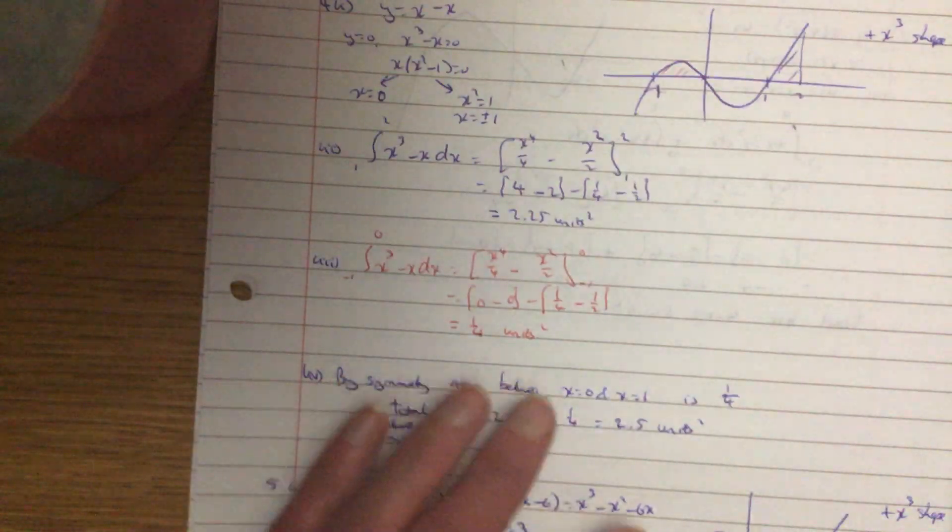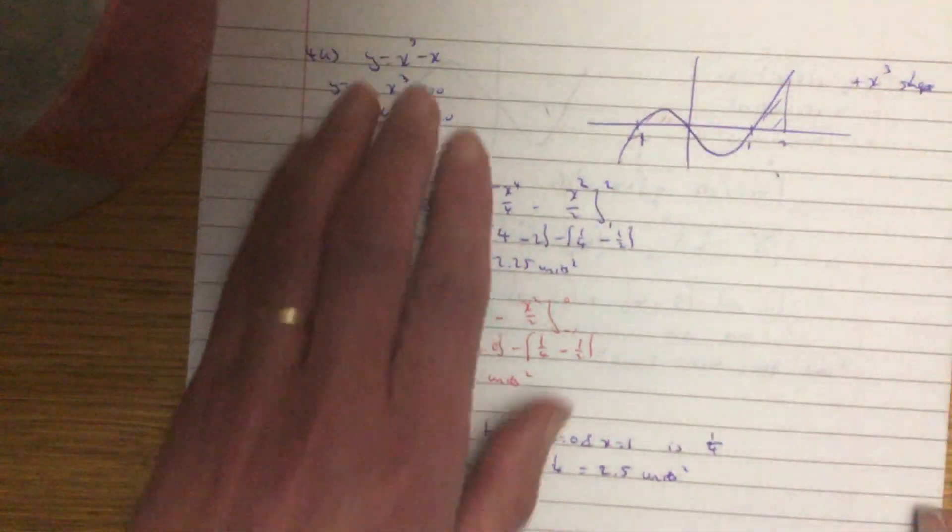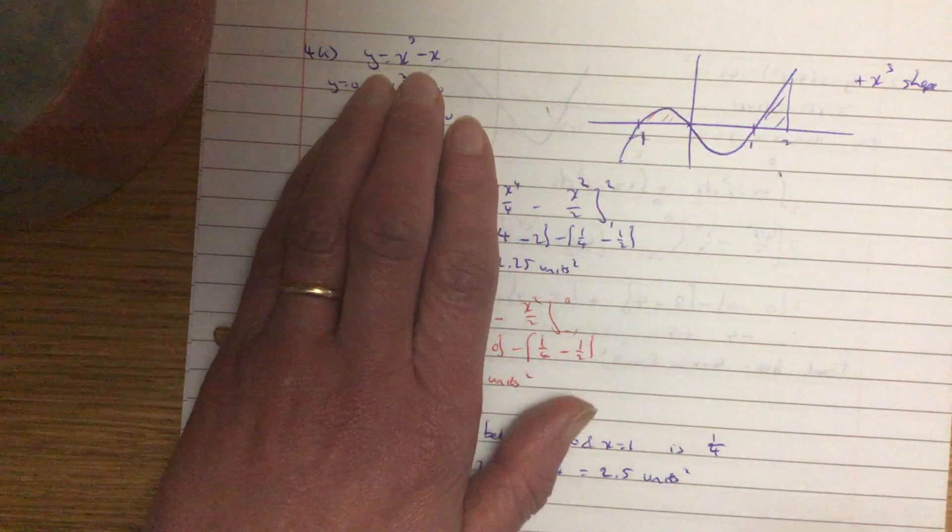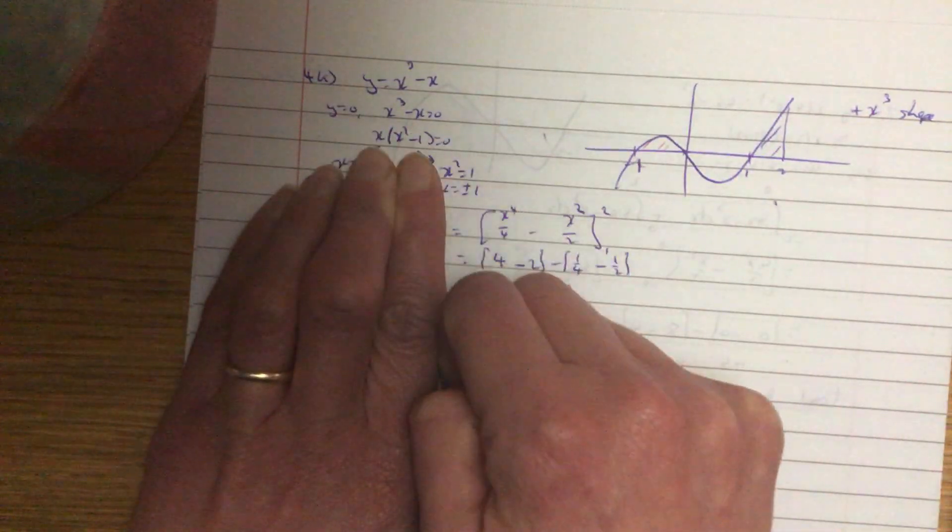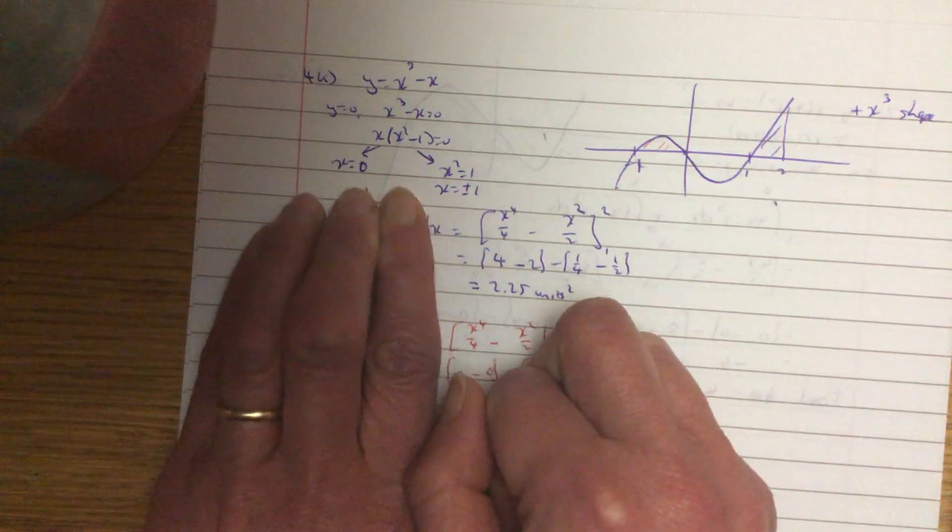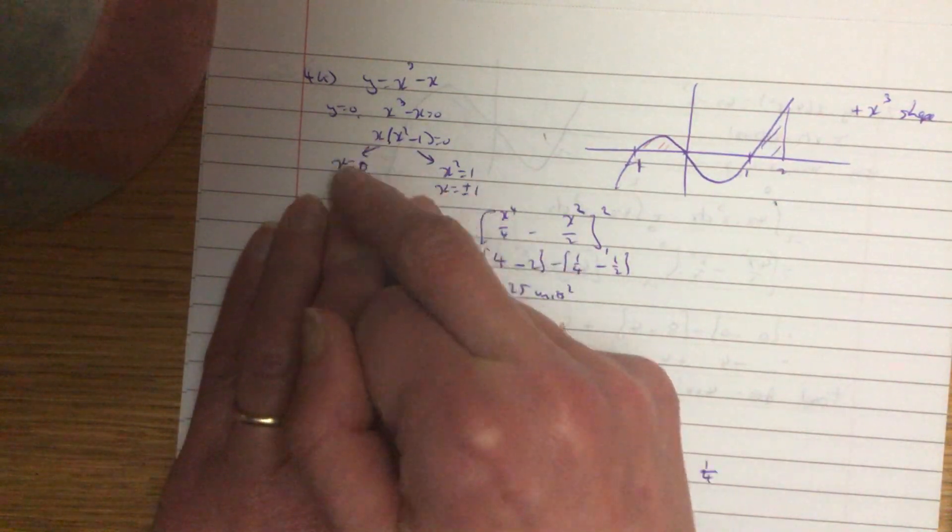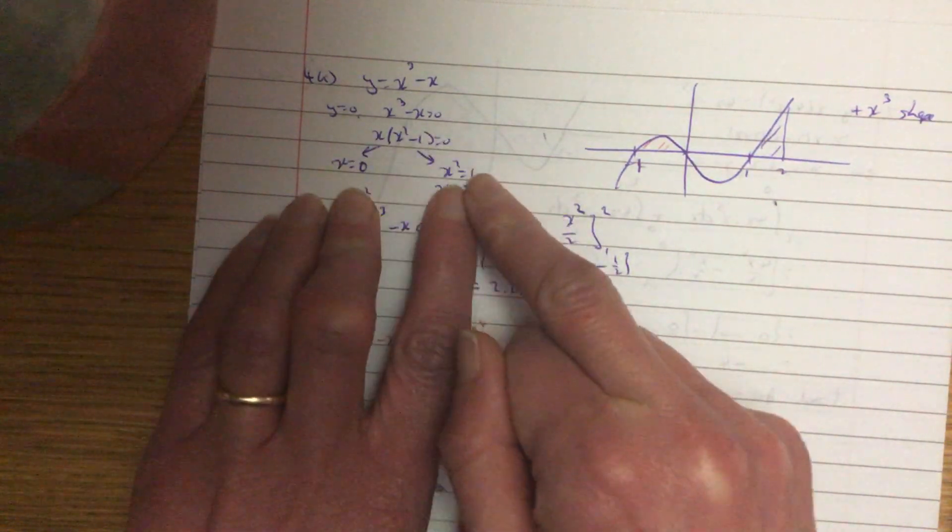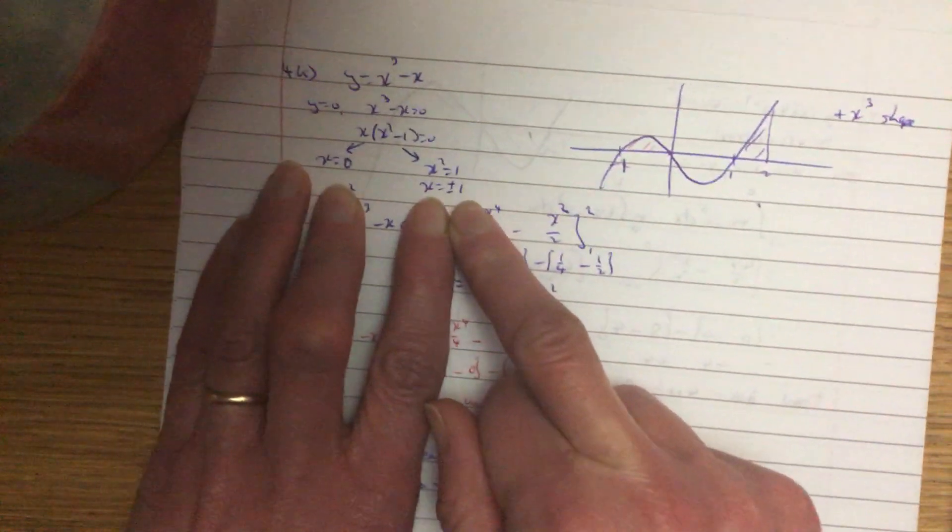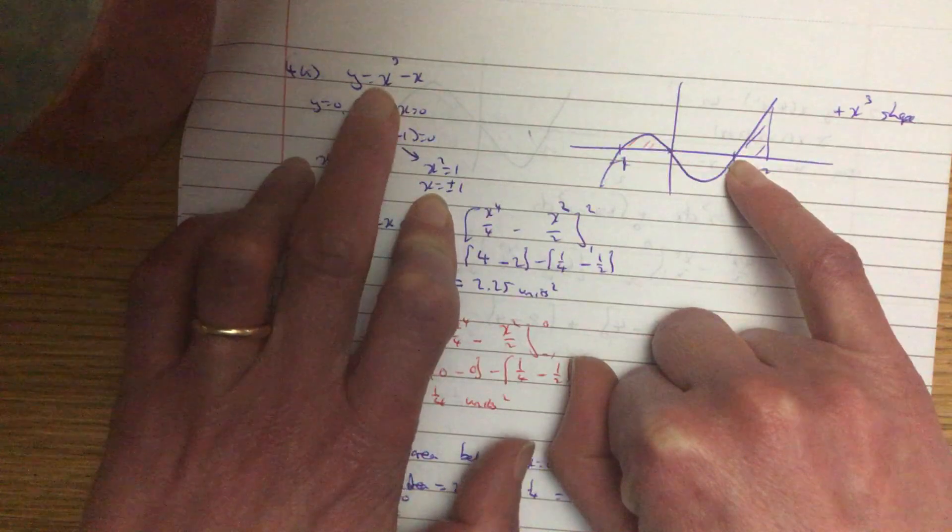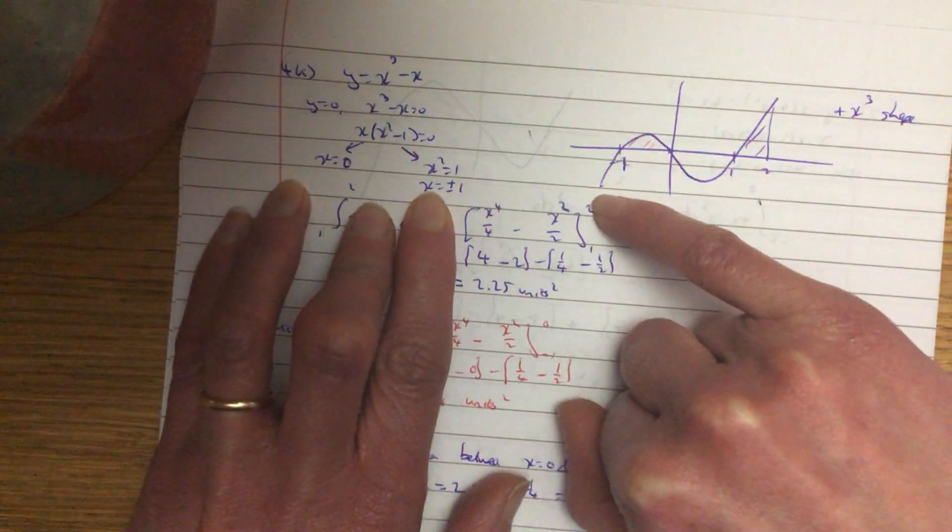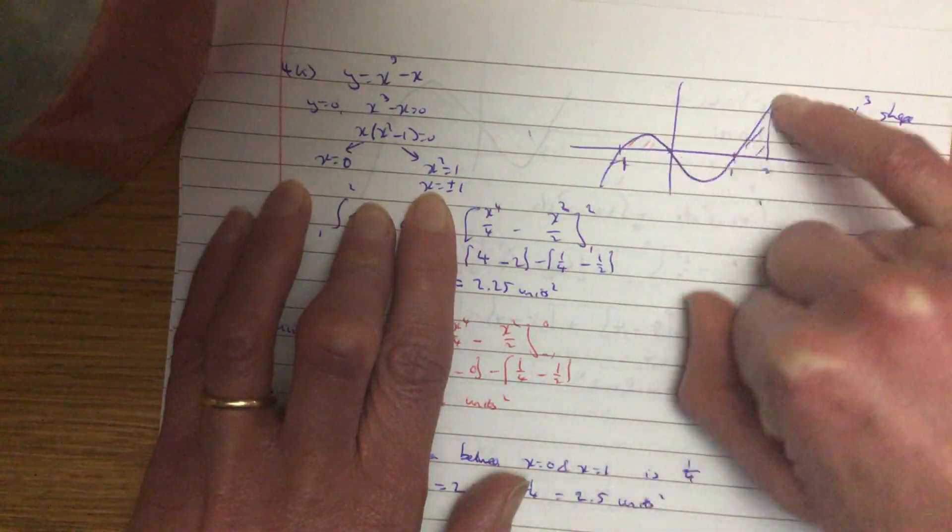Next question we're going to look at is question 4. So let's sketch this curve. So standard process, y equals 0. So y equals 0. Pull out your x. That's a difference of two squares, or you can just do the way I've done it there. x is 0 for the first one. x squared equals 1. So x equals plus or minus 1. So this graph crosses at minus one, 0 and 1. It's a positive x cube. So it's low, goes up and so on.